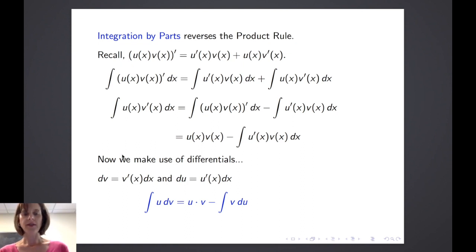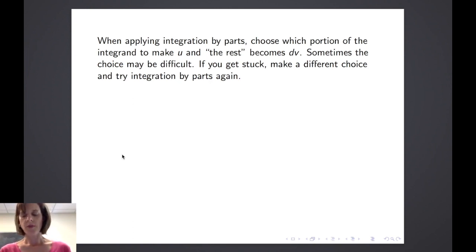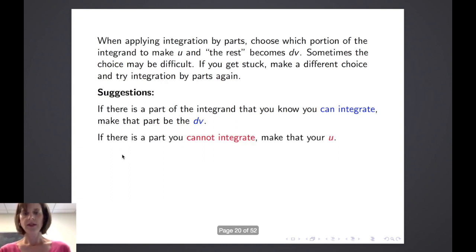As we apply this technique, we need to make choices for u and dv to represent the entire integrand. Once we find those choices, we find du and v, and then we can write the right-hand side of the equation. We need to choose which portion of the integrand to make u, and the rest becomes dv. Sometimes the choice can be difficult — if you get stuck, make a different choice and try integration by parts again. A couple of suggestions: if there's a part of the integrand that you know you can integrate, let that be dv; similarly, if there's a part you cannot integrate, let that be your u.